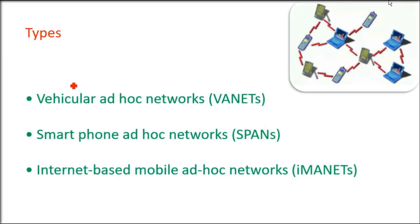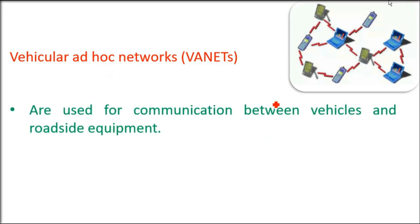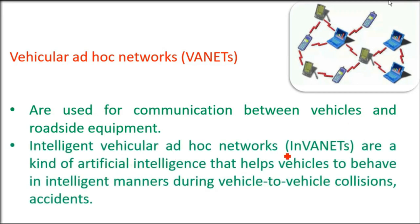There are different types of MANETs. First are VANETs — Vehicular Ad Hoc Networks — where we are talking about automobiles. Then we have SPANs — Smartphone Ad Hoc Networks. And we have iMANETs — Internet-based Mobile Ad Hoc Networks. Vehicular ad hoc networks apply when two moving vehicles, or a vehicle and roadside equipment, need to maintain or form an ad hoc network.